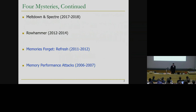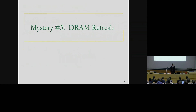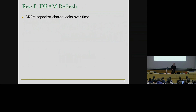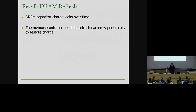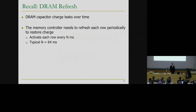So we will continue with memory refresh. So this was the third mystery. Just as a quick recap, in the last lecture we learned that DRAM capacitors are leaky and they lose charge over time, and this leads to eventually losing the data. So in order to keep data in memory, the memory controller periodically refreshes the DRAM cells. And typically this happens at 64 milliseconds interval in DRAM we have today.